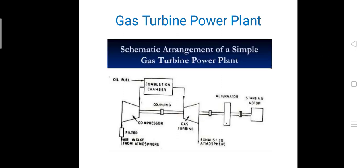This is the schematic arrangement of a simple gas turbine power plant. The major components are the compressor, combustion chamber, and gas turbine. The air from the atmosphere enters the compressor by means of a filter. The filter removes dust particles from the air and passes only clean air inside the compressor.